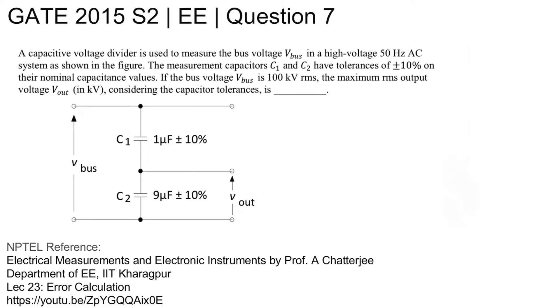A capacitative voltage divider is used to measure the bus voltage V_bus in a high voltage 50 Hz AC system as shown in the figure. The measurement capacitances C1 and C2 have tolerances of 10% on their nominal capacitance values. If the bus voltage V_bus is 100 kV RMS, the maximum RMS output voltage V_out considering the capacitor tolerance is being asked.